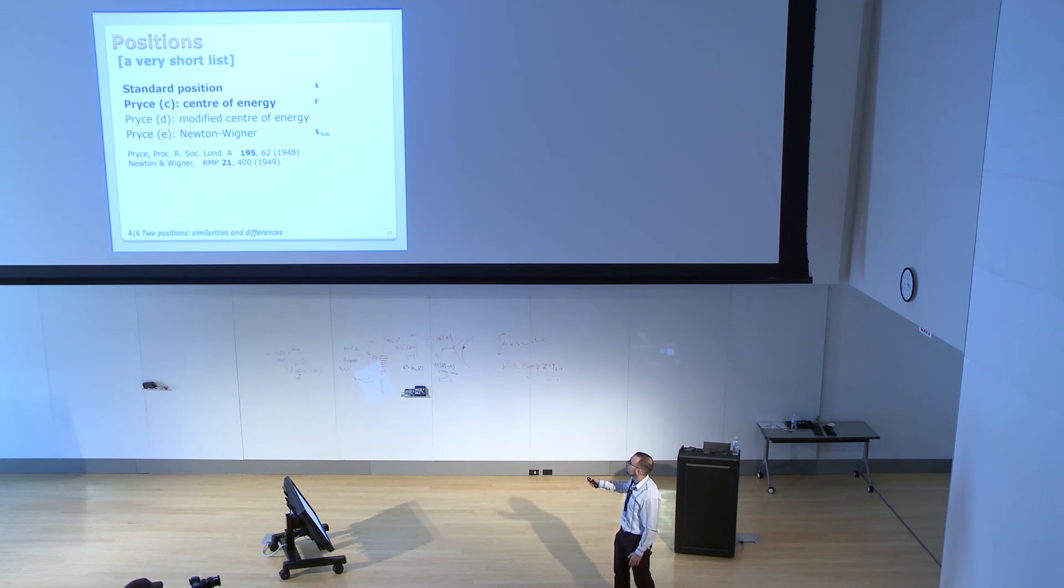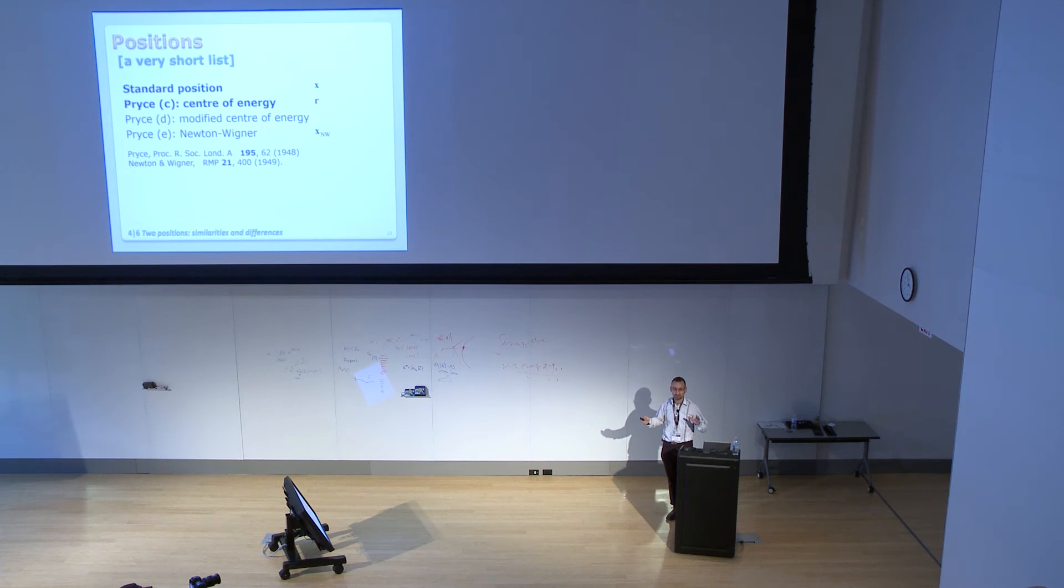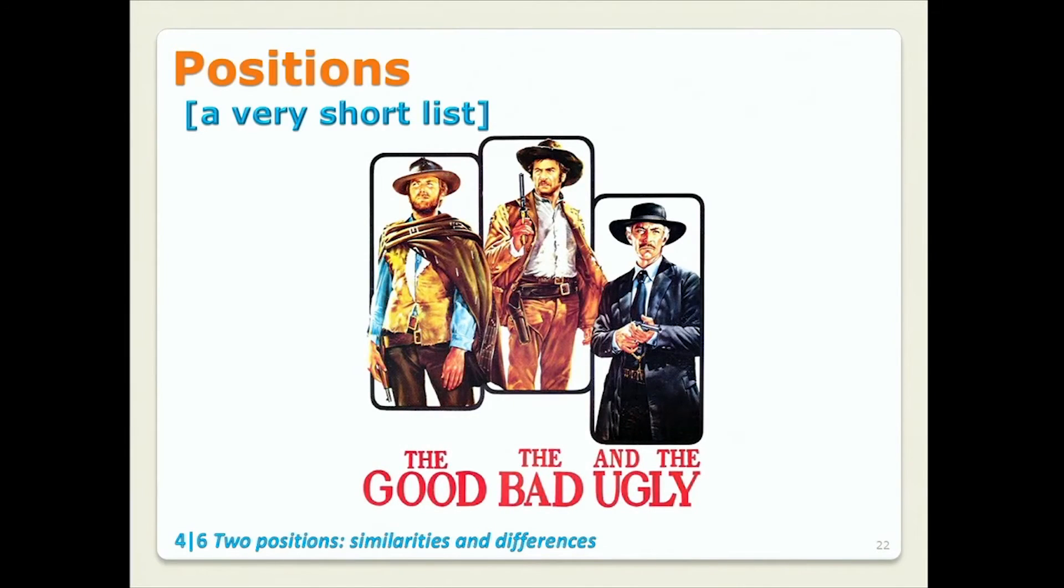So center of energy. Then we have some fancy center of energy, which I'm not going to discuss. And what is called Pryce E or actually Newton-Wigner operator for Dirac particles. Now analyzing all those operators and localization in general reminds me of a famous Western. Can you guess which one? Well, it's good, bad, and ugly. And since it's quantum, everybody is in a superposition.